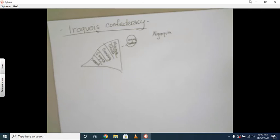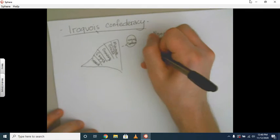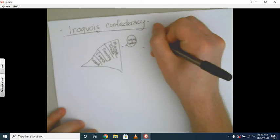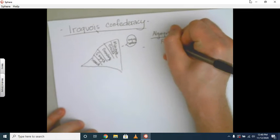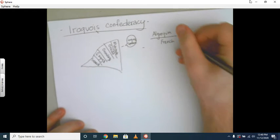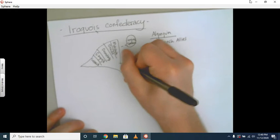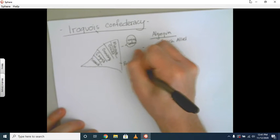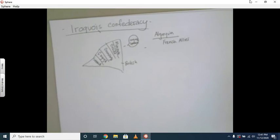Eventually, if you did the explorer's notes, you're going to know that the French are going to be allies of the Algonquin and that the British are going to be allies of the Iroquois. These are the two most powerful tribes.